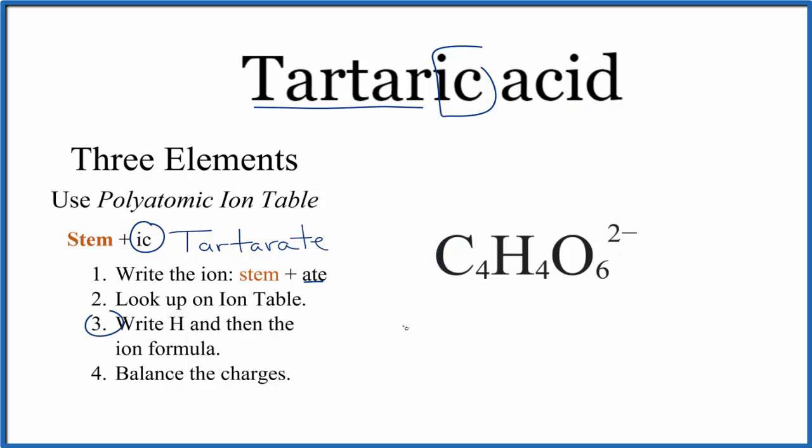Since it's an acid, we're going to put an H in front of this ion here. So we put an H here, and we need to balance the charges. Hydrogen has a 1 plus ionic charge, so we're going to need 2, 2 times 1 plus, to balance out the 2 minus.